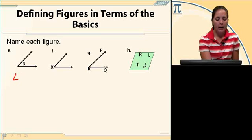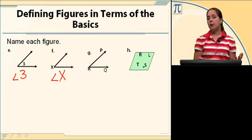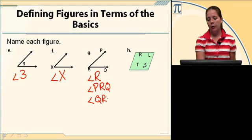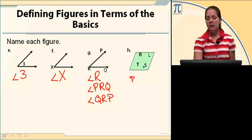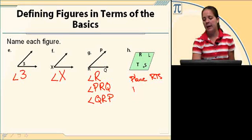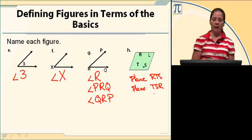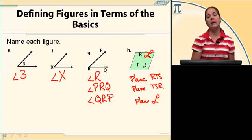Let's try it with some angles. Here I have angle 3. On F, we have angle X. For G, I've got several options. I can call it angle R because it's the only angle with R as a vertex. I can call this angle PRQ, or angle QRP — vertex has to be in the middle. H is a plane. I've got plane RTS, plane TSR, plane SLR — any combination of those three letters, any order, doesn't matter. Now, if this L were a capital script L, then we could say plane L and not have to use three letters.